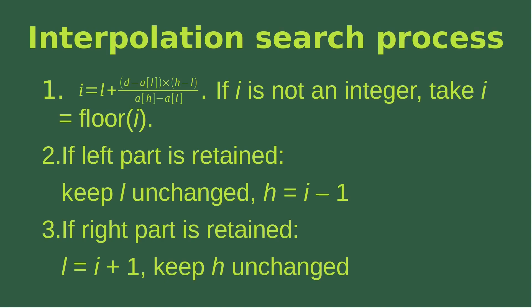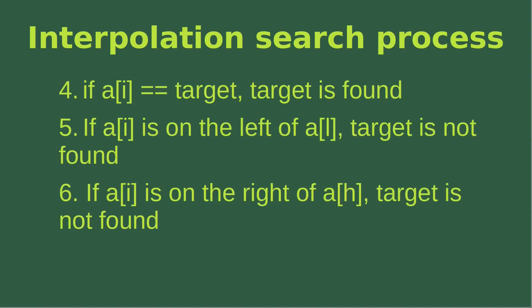Third, if the right part is to be retained, we update the low index to i plus 1 and keep h unchanged. Fourth, if the element at the probable index is equal to the target, we say the target is found. On the other hand, if the index value i corresponds to an element that is on the left-hand side of the low index element, we say the target cannot be found, because it cannot be in the portion of the array to be searched for. Also, if the value of index i is on the right-hand side of the high index element, we likewise say the target cannot be found.